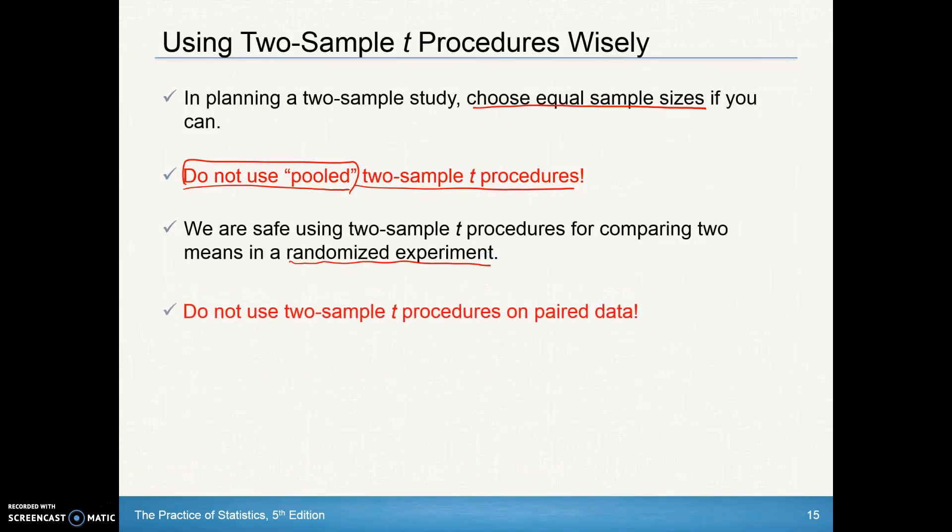Do not use two-sample t procedures on paired data. This goes back to chapter nine when we had paired data paired t-test. That's looking at a before-or-after situation where we're looking at the difference between two treatments on one person.